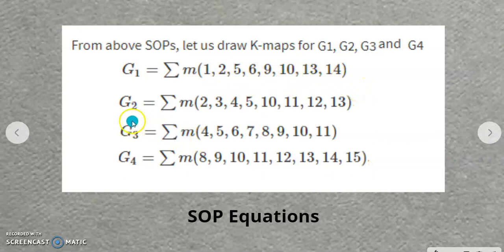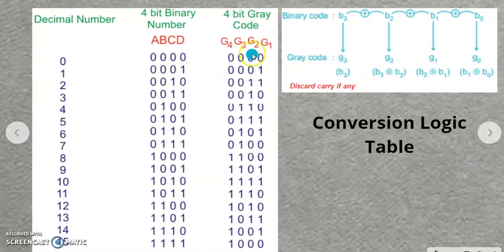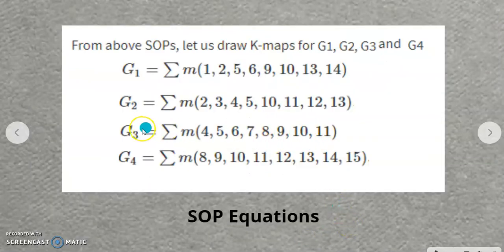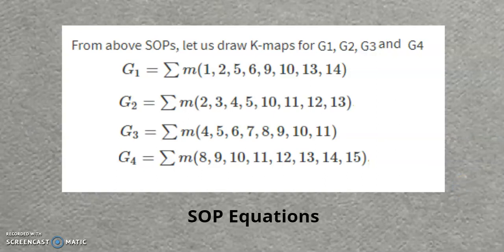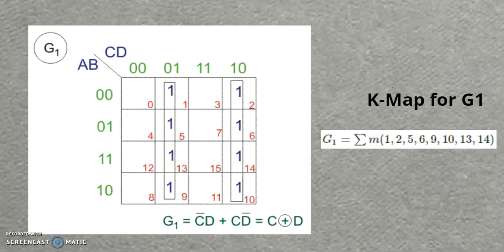Similarly, you can obtain equations for G2, G3, and G4 by collecting the min-term values where the output is 1 in each respective column. Now all SOP equations for all outputs are ready. After getting the SOP equations, we need to simplify and reduce them using KMAPs. I will draw the KMAP for G1 first.